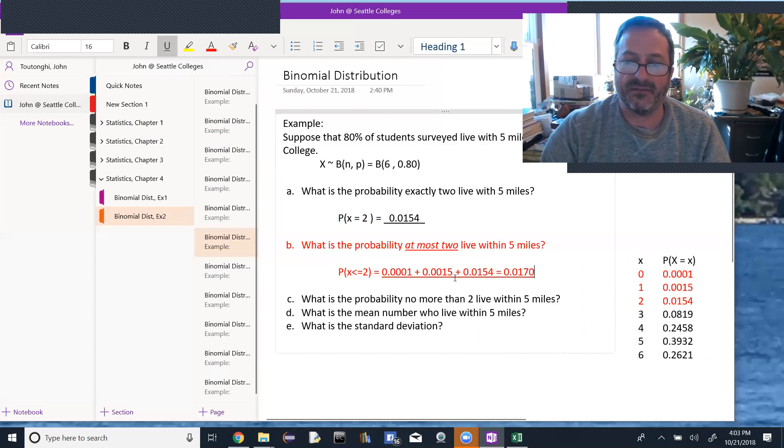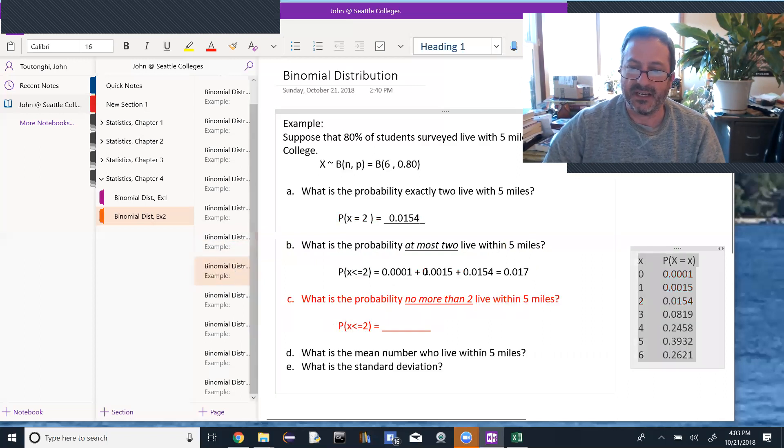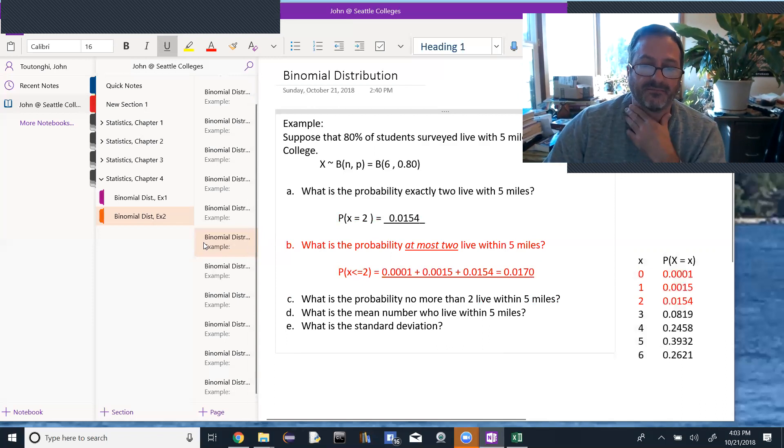And we get 0.017. Usually we take these values to four decimal places. It's not necessary, but just be careful, and that one did not round, but it rounded less than four, but I added a zero. Maybe be careful in Excel or in WAMAP what it wants. For your own work, I would say four decimal places is the best to use. So that answer is 1.7%, 0.0170 is the probability that at most two live within five miles.